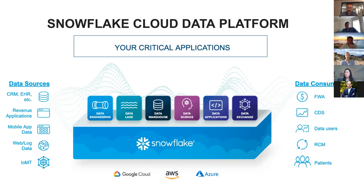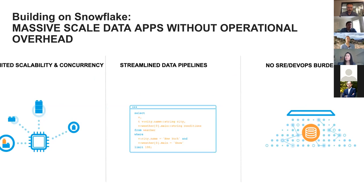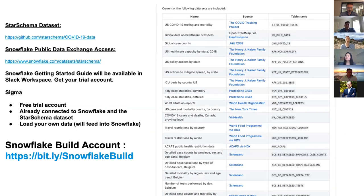I'm actually a former customer — the first to put PHI in Snowflake back in 2016, so I have a lot of experience with that. Our Data Exchange is one of our newest features and will be applicable to what we're bringing to the hackathon. Core competencies include unlimited scalability and concurrency, streamlined data pipelines, and reduced DevOps burden from a data replication perspective.